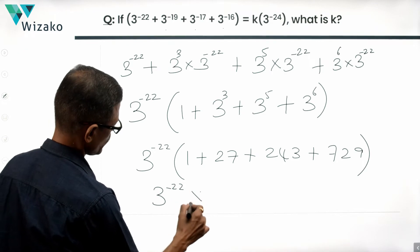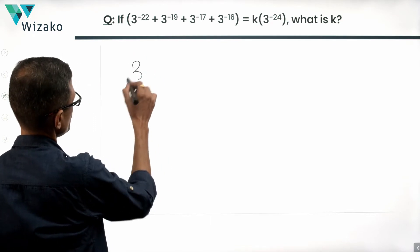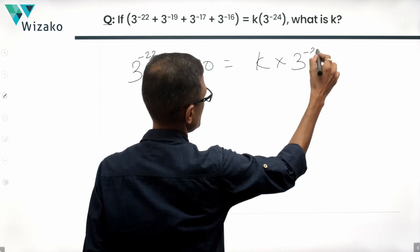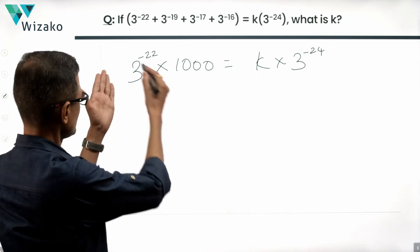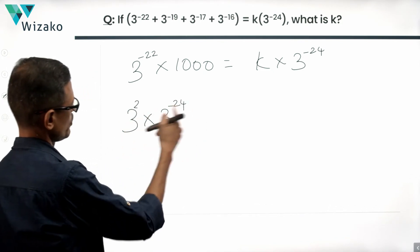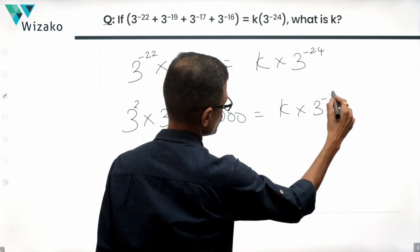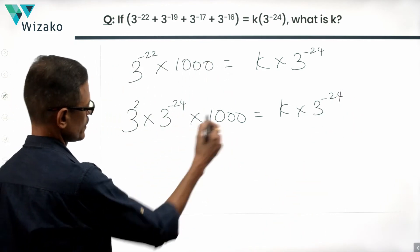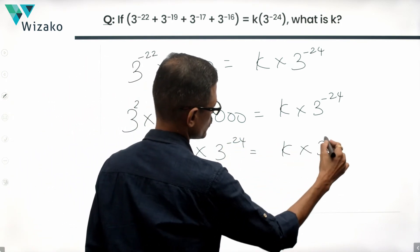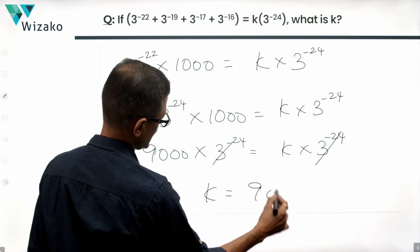So we have 3 raised to the power of minus 22 into 1000 as the left hand side. Now, 3 raised to the power of minus 22 into 1000 equals k into 3 raised to the power of minus 24. I'll write 3 to the power of minus 22 as 3 squared into 3 raised to the power of minus 24. That gives us 9 into 1000 into 3 raised to the power of minus 24, which equals k into 3 raised to the power of minus 24. Dividing both sides by 3 raised to the power of minus 24, k equals 9000.